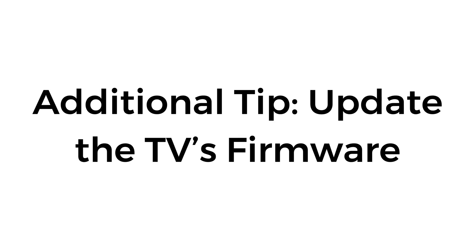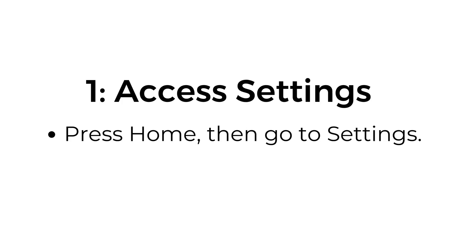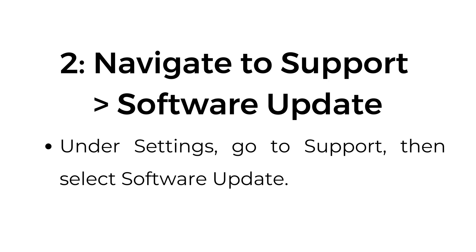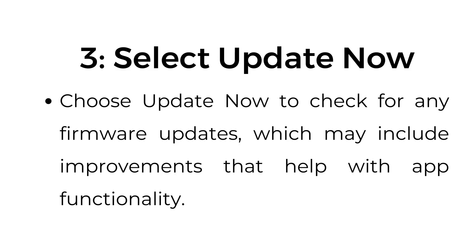Additional tip: Update the TV's firmware. Step 1: Access Settings — press Home, then go to Settings. Step 2: Navigate to Support and Software Update — under Settings, go to Support, then select Software Update. Step 3: Select Update Now to check for any firmware updates, which may include improvements that help with app functionality.